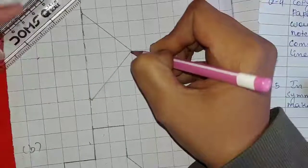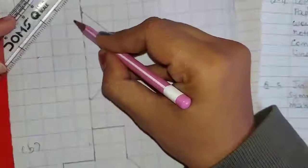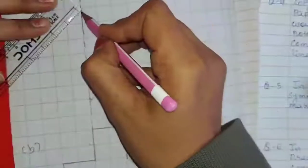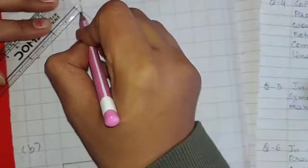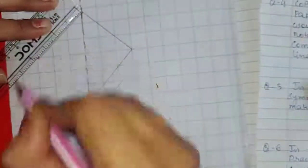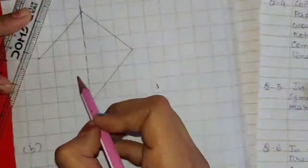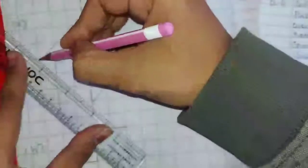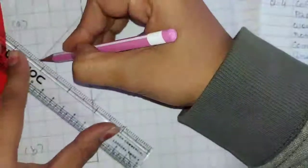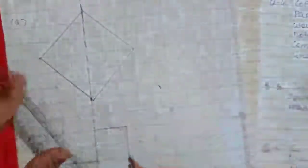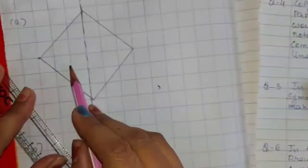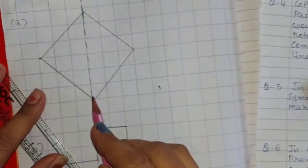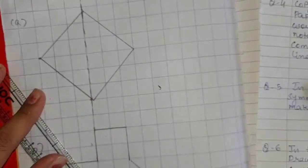This is the figure given. Vertical line of symmetry is given. We will count three boxes and draw the same line segment from the question. Then again we will count three boxes and draw the same line segment from the question. This is the mirror image of the question with vertical line of symmetry.